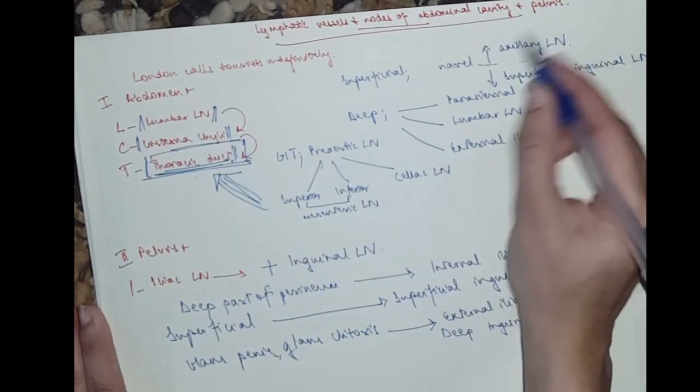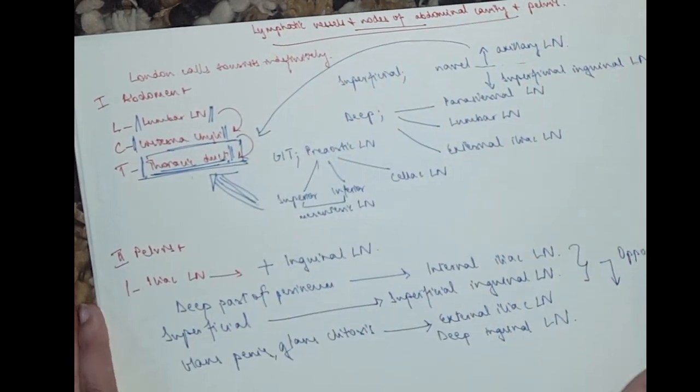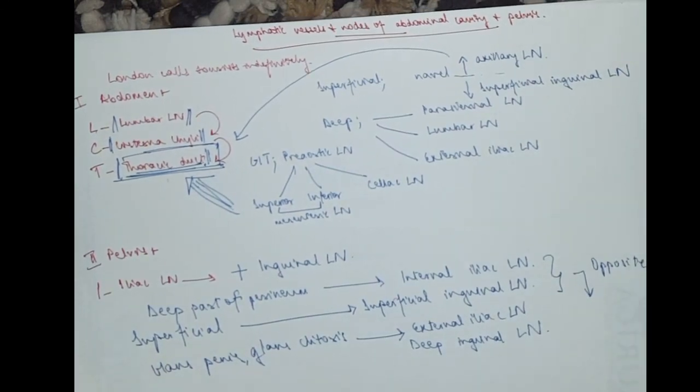From the axillary lymph nodes, obviously, it goes to the thoracic duct if it's on the left side. And if it's on the right side, it goes to the right lymphatic duct.